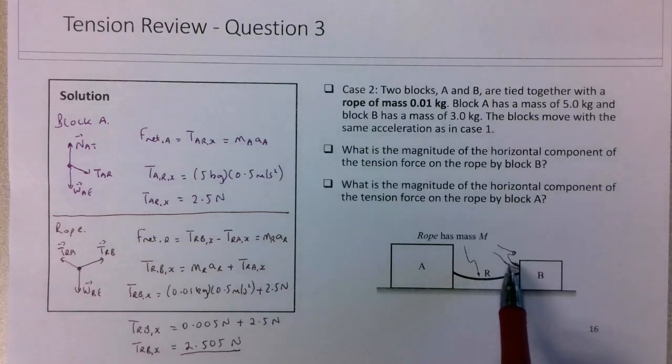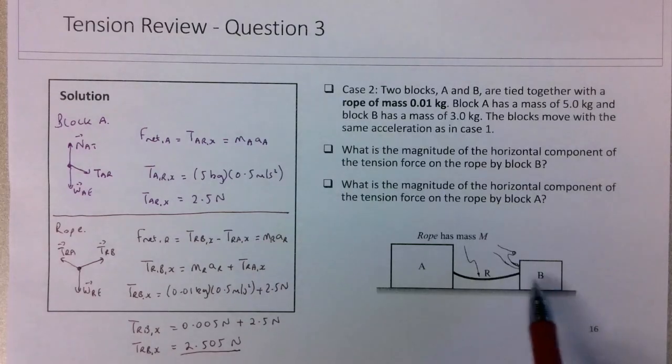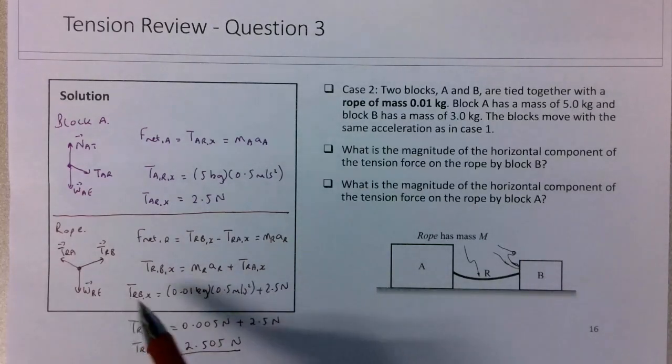Then you could consider, what does the net force on B stay the same? So what tension force would the rope exert on B? Or you could do it from the rope scenario. But the important point here that we want to drive home...